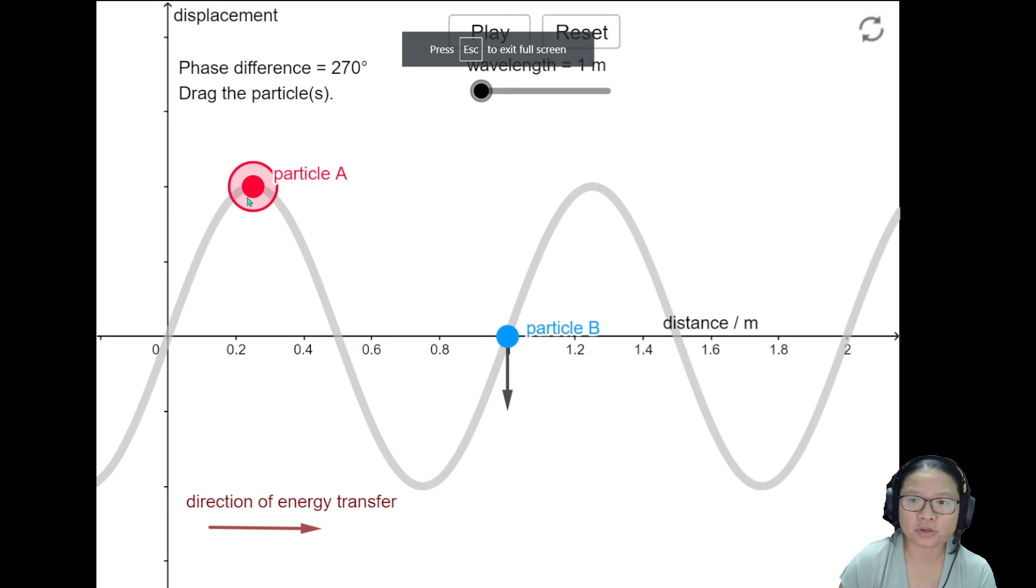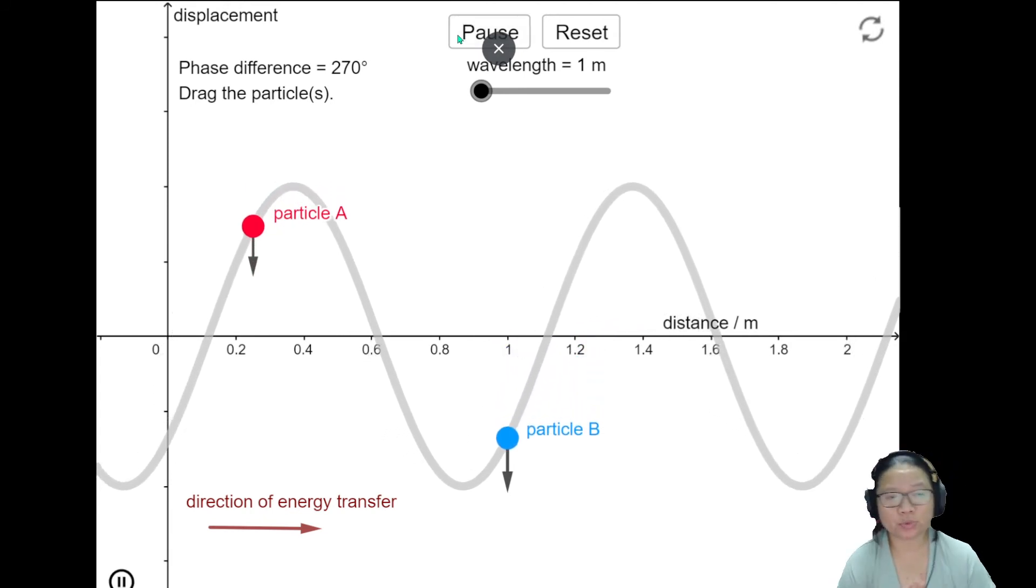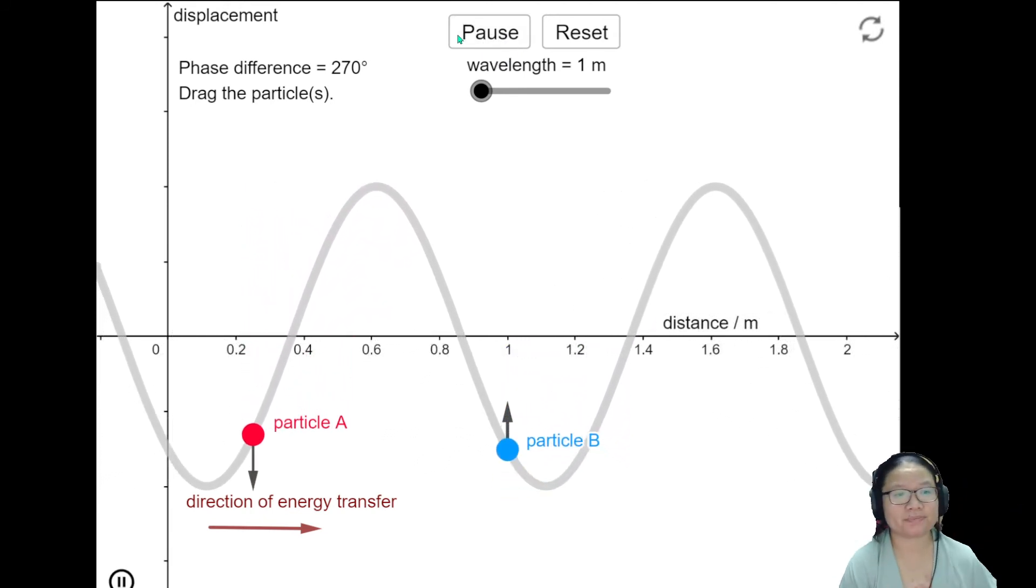this is particle P, red color is particle P, blue color is particle Q. I press play, yeah. So the wave is obviously traveling from left to right, okay?